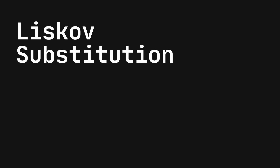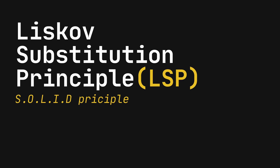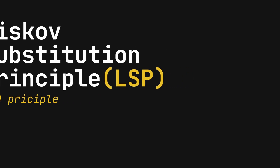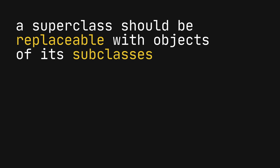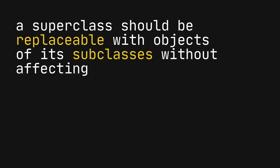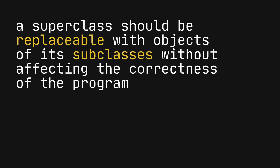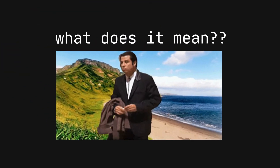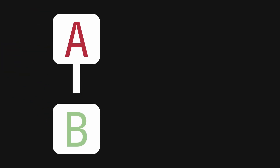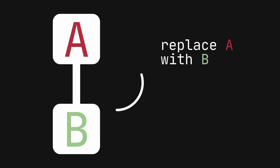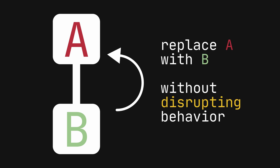The Liskov Substitution Principle states that objects of a superclass should be replaceable with objects of its subclass without affecting the correctness of the program. It means that if class B is a subclass of class A, then we should be able to replace A with B without disrupting the behavior of our program.